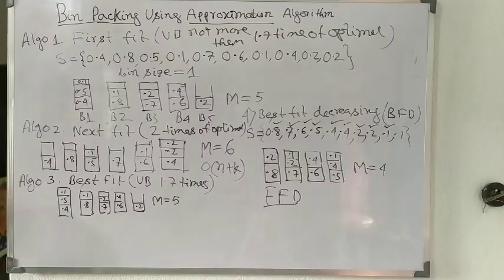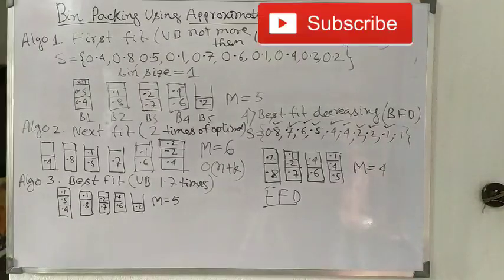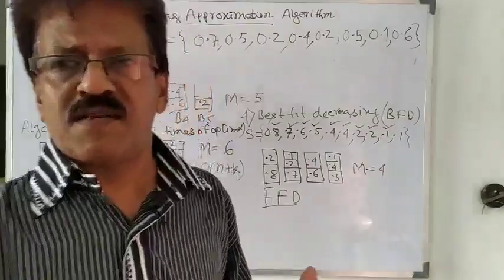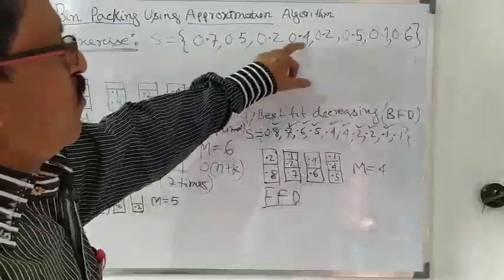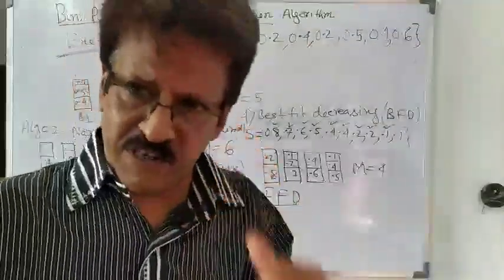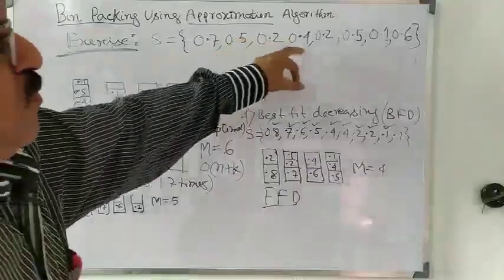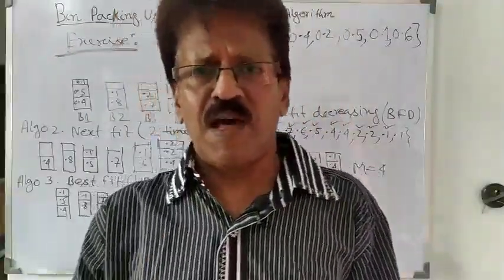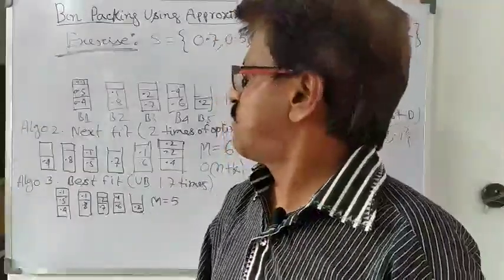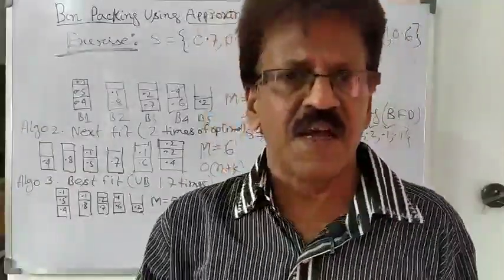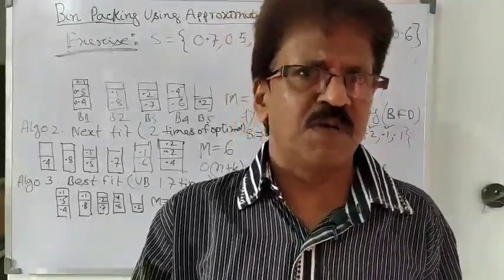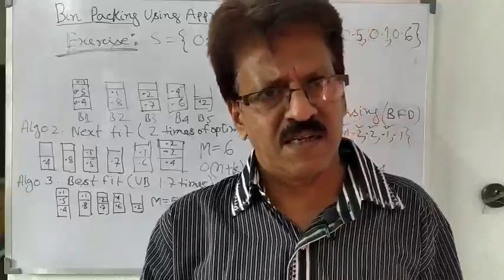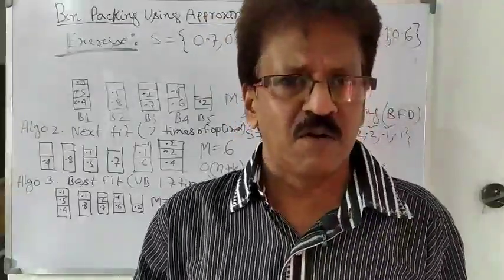Now for the exercise: solve at home using 8 elements with sizes 0.7, 0.5, 0.2, 0.4, 0.2, 0.5, 0.1, and 0.6. Apply at least four algorithms: First Fit, Next Fit, Best Fit, and Best Fit Decreasing. You can also apply First Fit Decreasing. If you find any problems, write in the description box or in the comments. Thank you, good day.